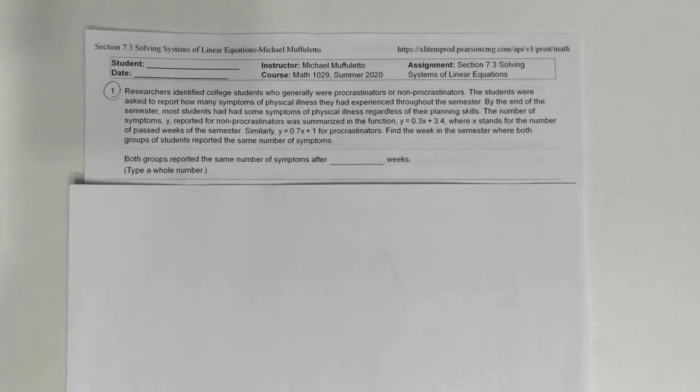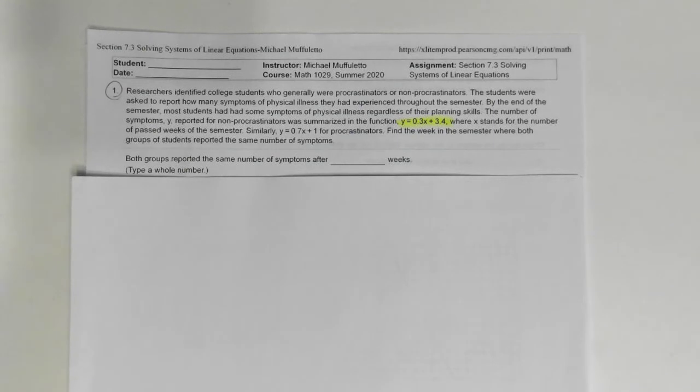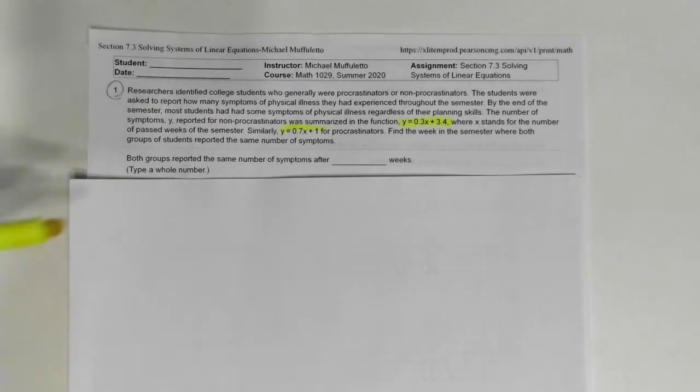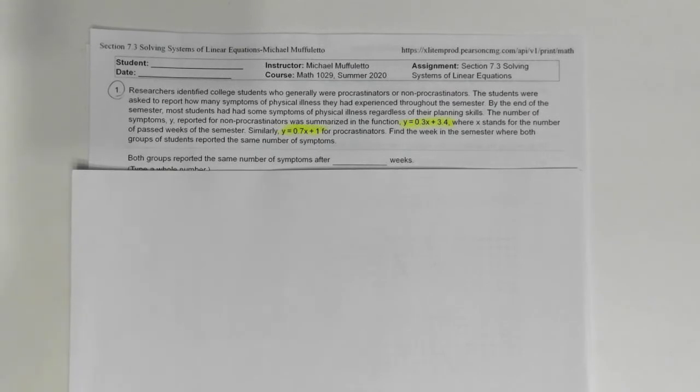Researchers identified college students who generally were procrastinators or non-procrastinators. The students were asked to report how many symptoms of physical illness they had experienced throughout the semester. By the end of the semester, most students had some symptoms regardless of their planning skills. The number of symptoms Y reported for non-procrastinators was summarized by the function Y equals 0.3X plus 4, where X represents the number of weeks of the semester. Similarly, Y equals 0.7X plus 1 was for procrastinators. Find the week in the semester where both groups had the same number of symptoms.